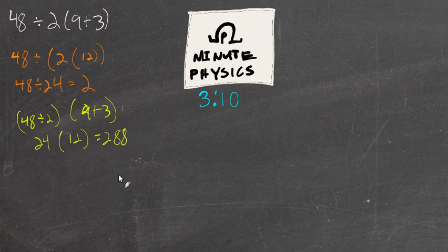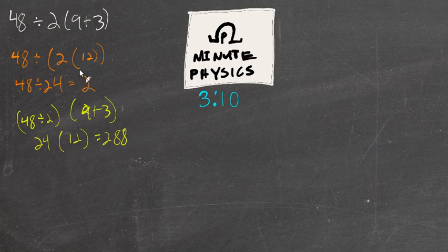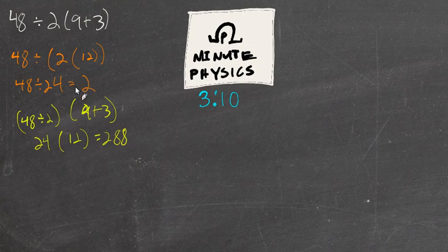Or I can do 48 divided by 2 first, so that would be 9 plus 3, that would be 24 times, this would be 12, that would give you 288. So people would work this out and some would get 2 and some would get 288 and they would have this argument about this is correct. Or no, this is correct. And it basically came down to you have to multiply these together first, or you have to divide these first.